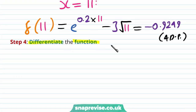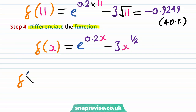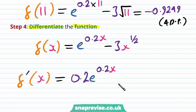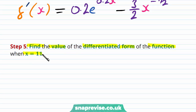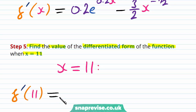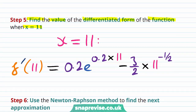Our fourth step is to differentiate the function. We have f(x) equals e^(0.2x) minus 3x^(1/2) in index notation. Differentiating gives f'(x) equals 0.2 times e^(0.2x) minus (3/2)x^(-1/2). Our fifth step is to find f'(11): f'(11) equals 0.2 multiplied by e^(0.2×11), minus (3/2) multiplied by 11^(-1/2), which equals 1.3527 to four decimal places.